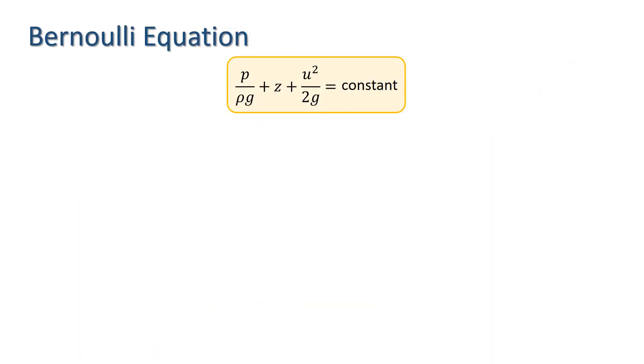Let's take a look at the different terms in the equation. The first term, P over rho g, is referred to as the pressure head, and is the pressure energy per unit weight, or work done. Note that this is the same as what we simply call the head in hydrostatics.